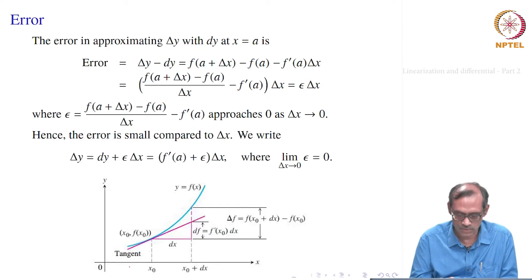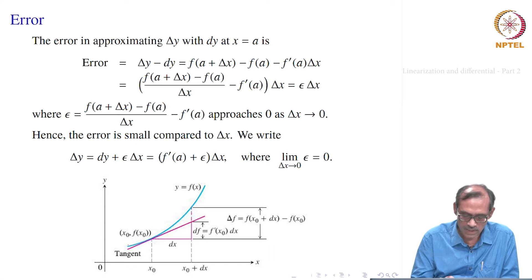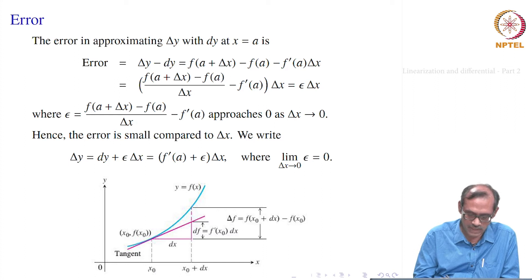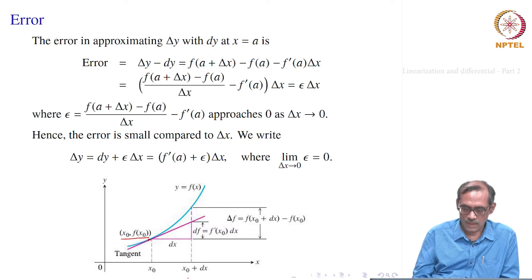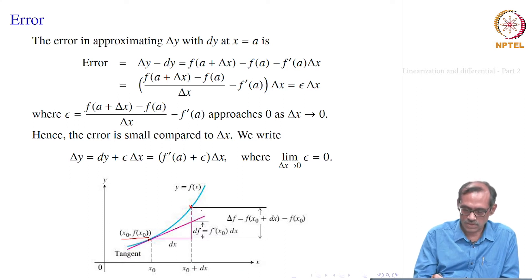Let us look at the figure. Suppose you have the curve y equal to f of x, and at the point a — which we are writing as x₀ here — we have the point x₀, f of x₀ on the curve, the blue one. We have a tangent at that point x₀, f of x₀, which is the pink one. Now at x₀ plus delta x, we have this point on the blue curve, and that height at x₀ plus delta x is really f of x₀ plus delta x.